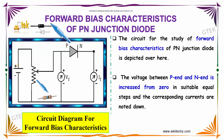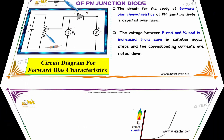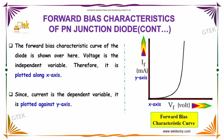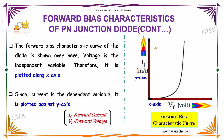In forward bias, positive is connected to positive and negative is connected to negative. The forward bias characteristics curve of the diode is shown here. Voltage is the independent variable, plotted along the x-axis, and current is the dependent variable, plotted along the y-axis.